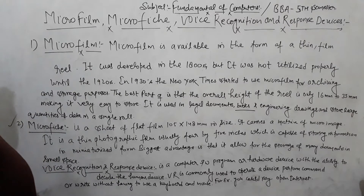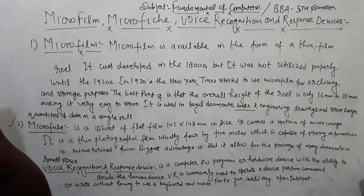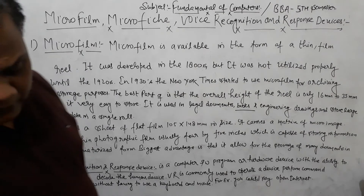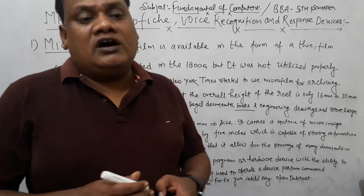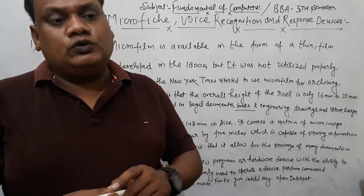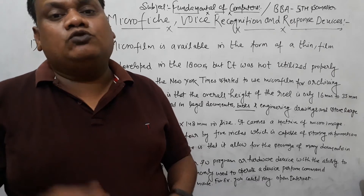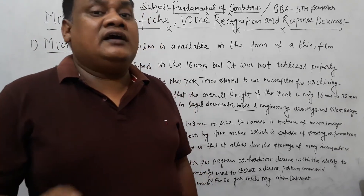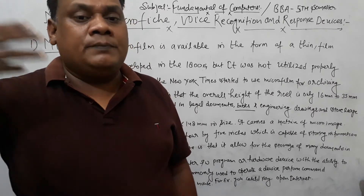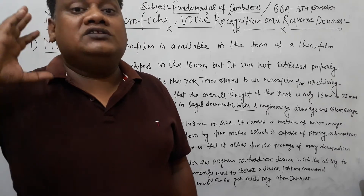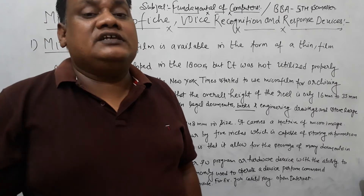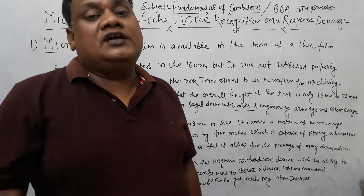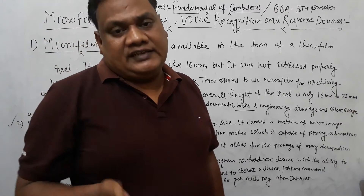The biggest advantage of microfiche is that it allows storage of many documents in a small space. This flat thin film format is used for journals, newspapers, and library archives — content we cannot easily keep otherwise can be safely stored and read later.